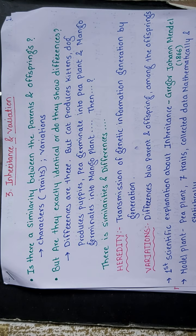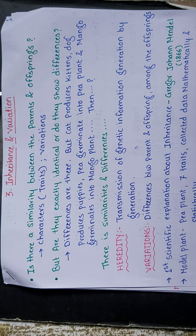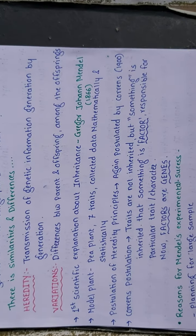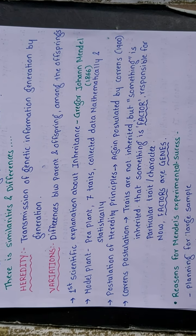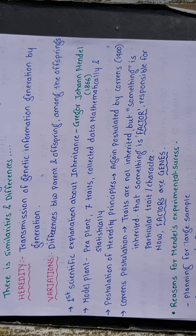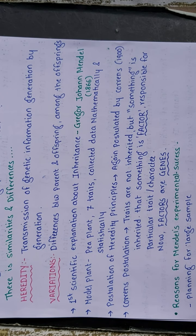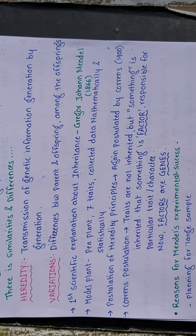What is genetics? Genetics is the branch of biology that deals with heredity and variation. This term was coined by William Bateson in the year 1906. The term 'genetics' is derived from the Greek word 'genesis,' which means 'to grow into.'